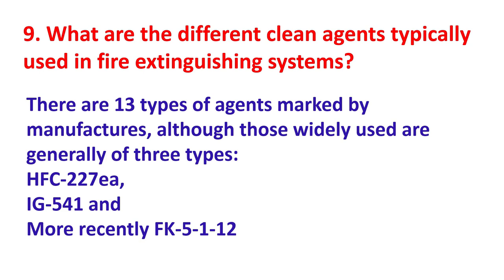What are the differences between agents typically used in fire suppression systems? There are 13 types of agents marketed by manufacturers, although those widely used are generally of three types: HFC-227ea (FM-200), IG-541, and more recently FK-5-1-12.